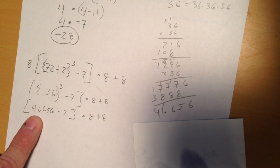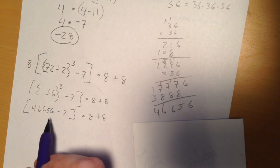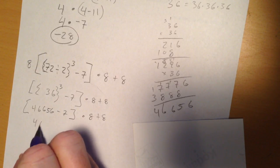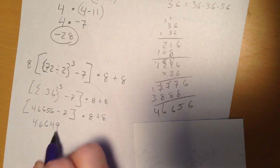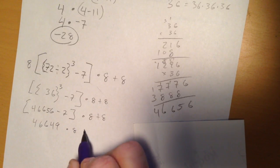Okay, now I've got a minus 7 from this before I can continue. So, that's going to give me 46649, times 8, plus 8.